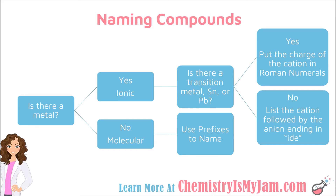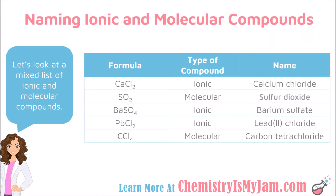When you have a compound that you need to name, there are a series of questions you should ask yourself. There is a printable version of this flowchart in the description. The first question is: is there a metal present? If there is a metal, it is an ionic compound, and you list the cation followed by the anion ending in "-ide." If there is not a metal present, it is a molecular compound, and you should use prefixes to indicate the number of each atom present.